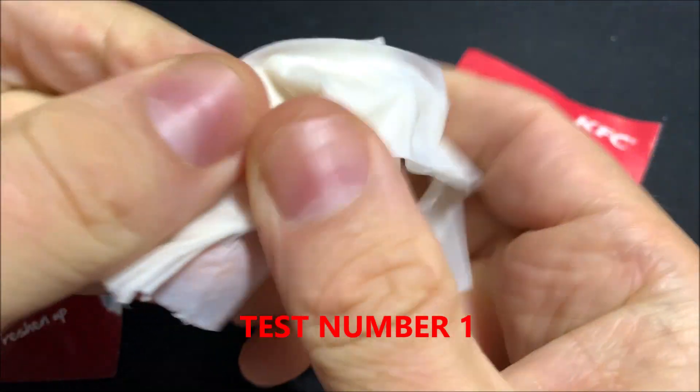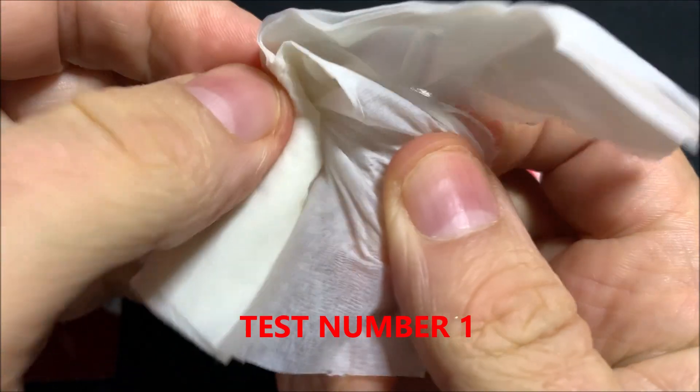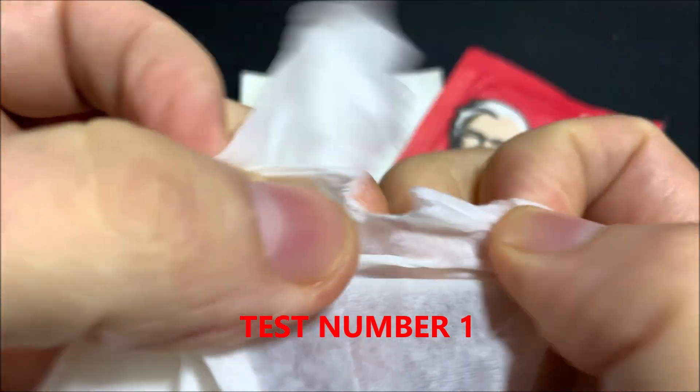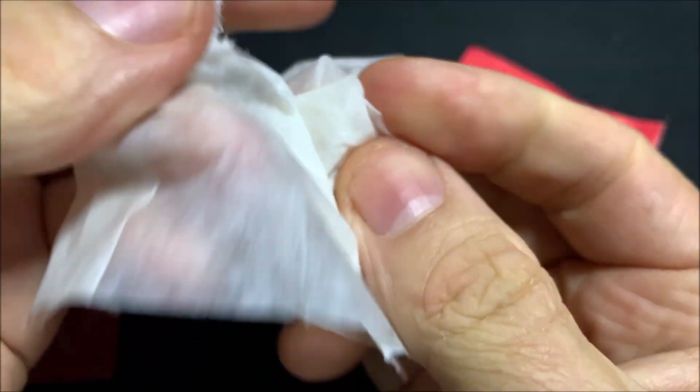Test number 1, I opened the first packet and it started to fall apart straight out of the packet. Well that certainly is a fail. I am not sure why it fell apart so easily, surely this is not acceptable to have the towels fall apart like this.